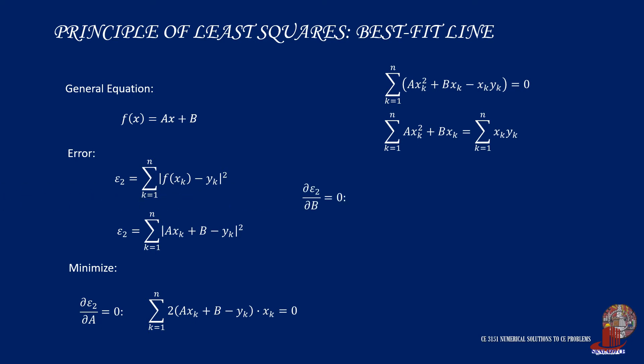The second derivative will be with e2 with respect to b. And just the same as the equation becomes 2 multiplied by the equation a times x sub k plus b minus y sub k. And check b which has no other coefficient so the derivative will just be multiplied by 1, and this is equated to 0.